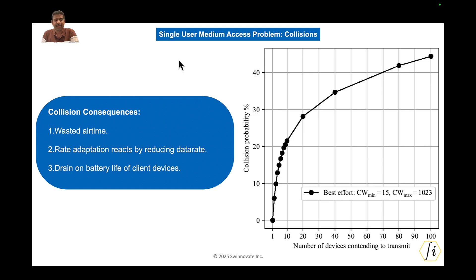Whenever a collision is encountered in Wi-Fi, three things happen. First, there is wasted air time. Second, whenever there is a collision, the rate adaptation algorithm tends to react by reducing the data rate, which definitely brings down performance further. And thirdly, there is a drain on the battery life of the client devices. So clearly, when you have a lot of clients connected to an access point running uplink traffic, collisions become a significant factor affecting performance and battery life.